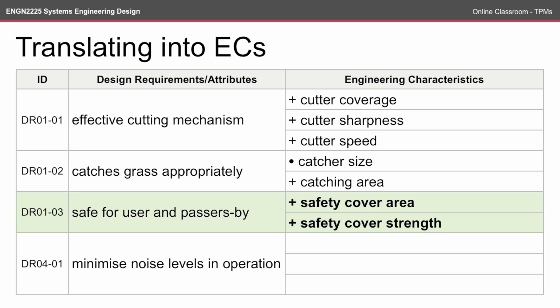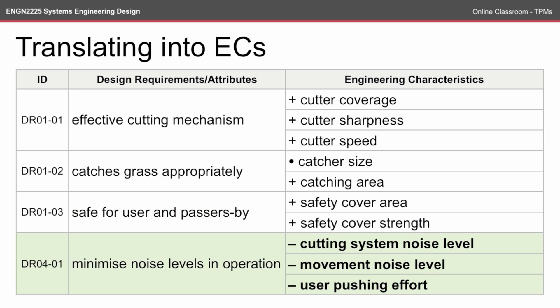Design requirement three looks at safe for users and passers-by. We want an increased safety cover area and increased safety cover strength — we don't want it made of something so lightweight that rocks might tear through it and hurt people walking by. For the second customer requirement, minimizing noise levels in operation, we want to reduce the cutting system noise level, reduce the movement noise level, and also reduce the user pushing effort — because if the user has a lot of frustration pushing it, they might yell out expletives, and we don't want that as part of the noise levels.